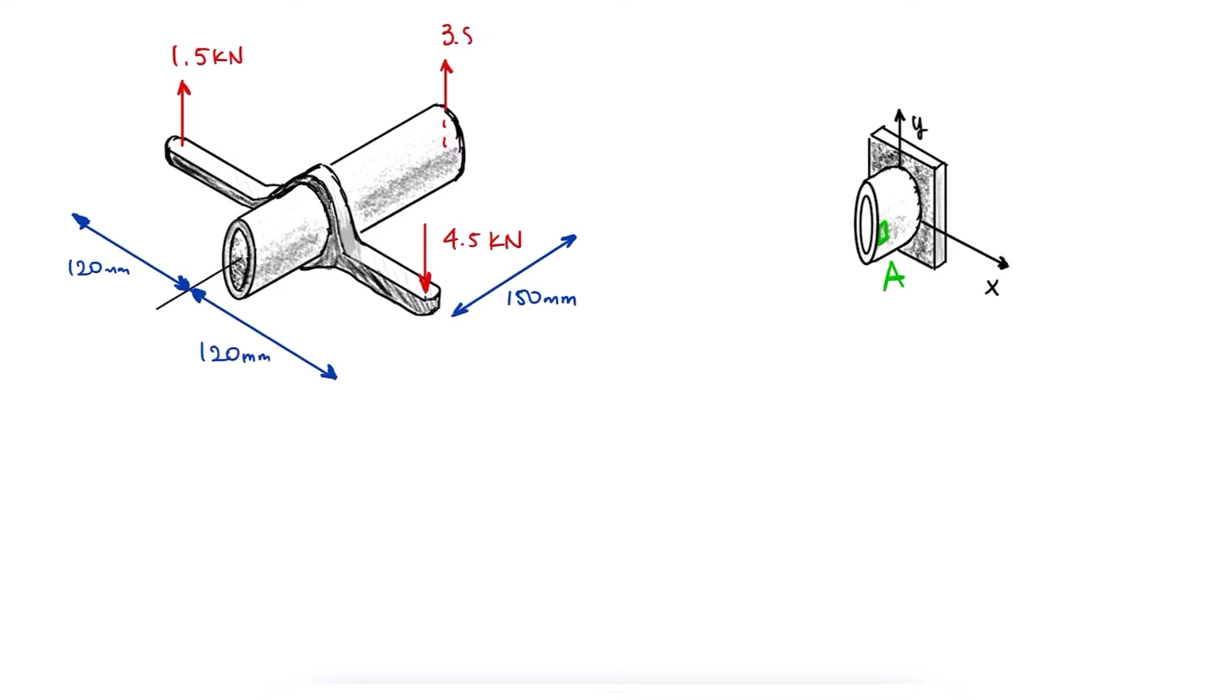Sum of forces in the vertical direction, sum of moments about the x-axis, and sum of torques, which is a sum of moments about the axis of the pipe or the z-axis.